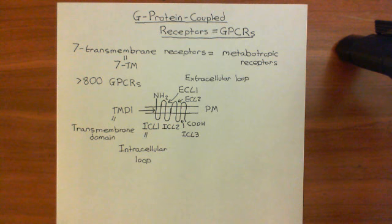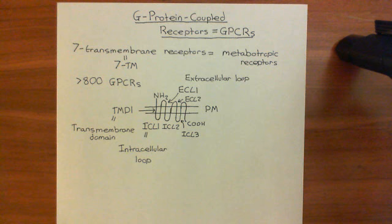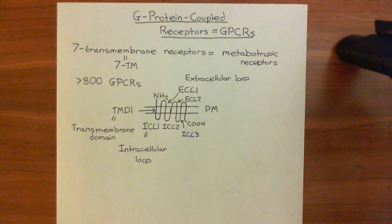This 7-transmembrane structure is always conserved in all G-protein coupled receptors. We don't know why nature found it and latched onto it so well — why 7 transmembrane domains, why 7 is so important. It's just a curiosity at the moment.